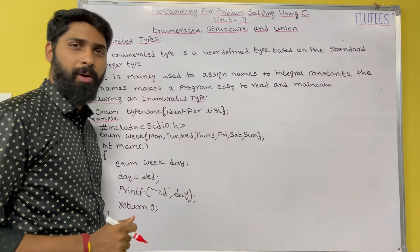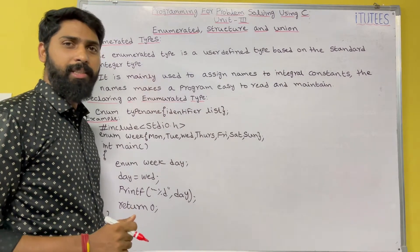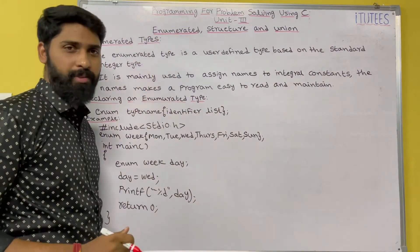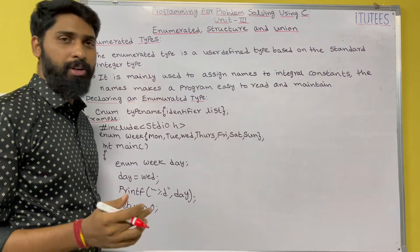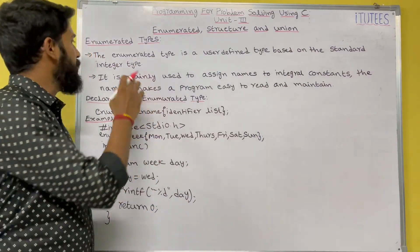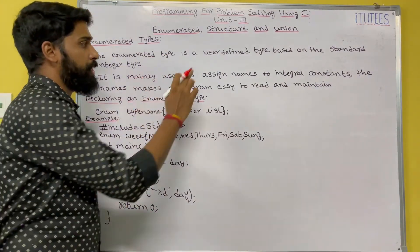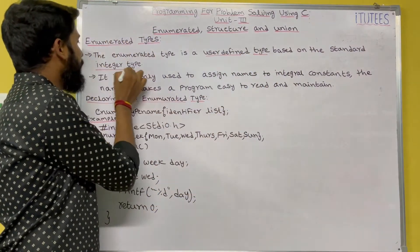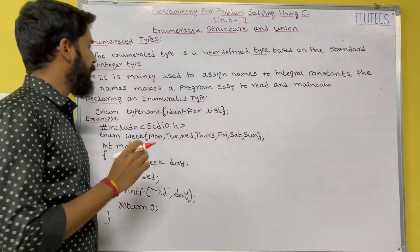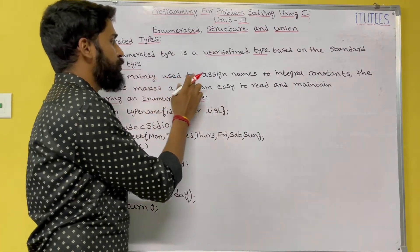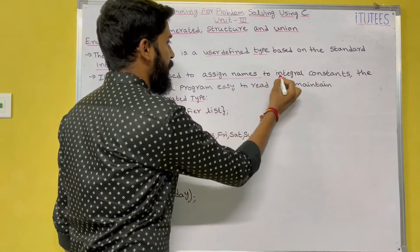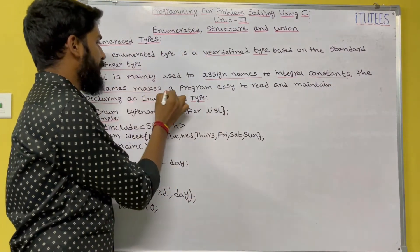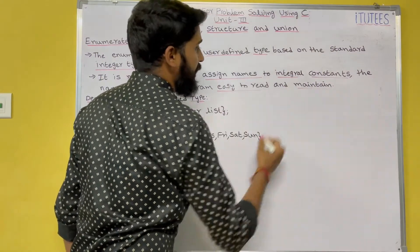Hello friends, welcome to C Programming Tutorials. In this class we are going to learn about enumerated types. The enumerated type is a user-defined type based on the standard integer type. It is mainly used to assign names to integral constants. The names make a program easy to read and maintain.